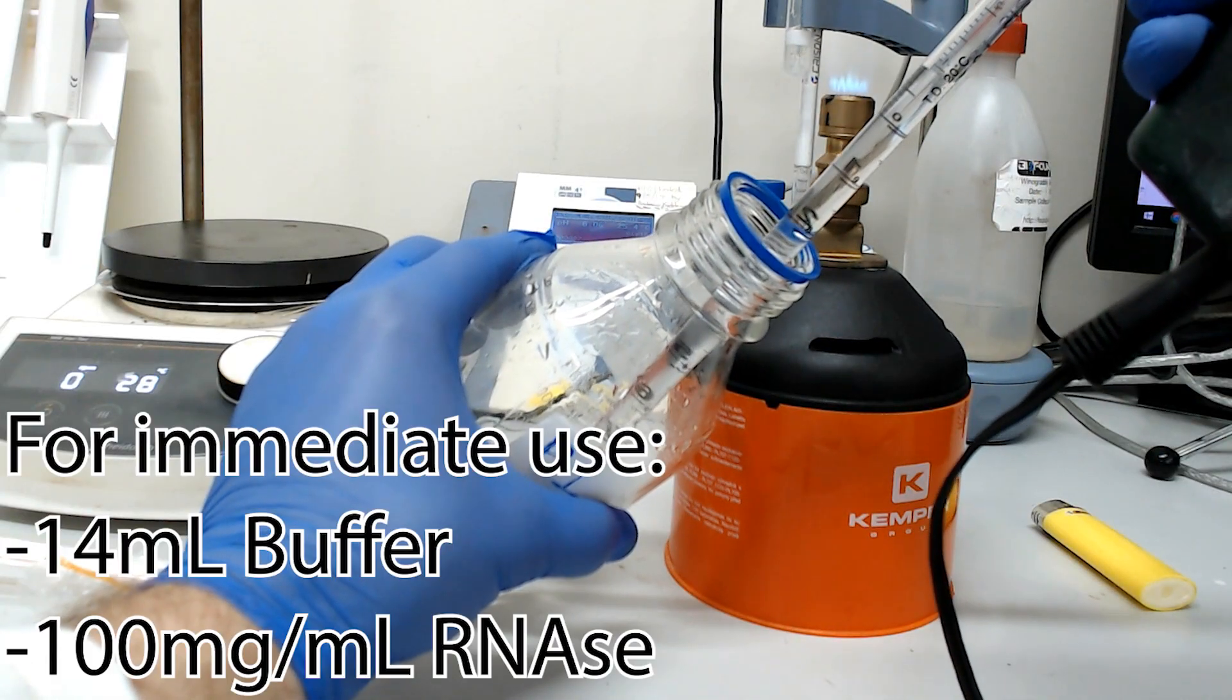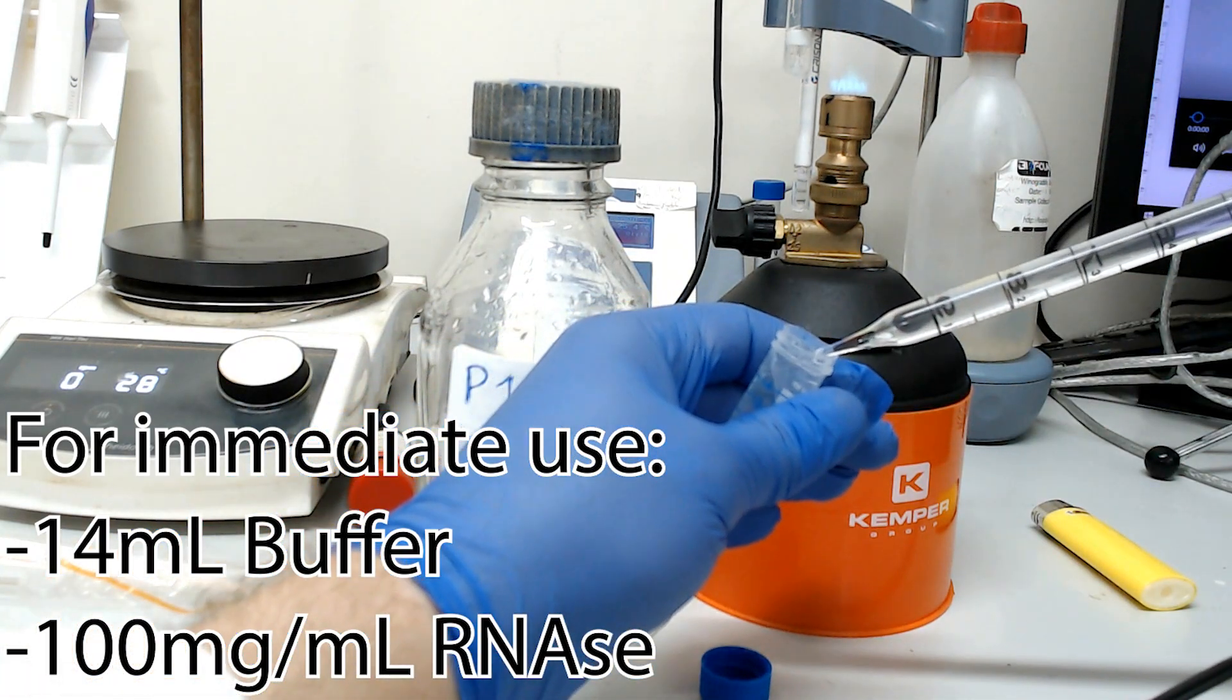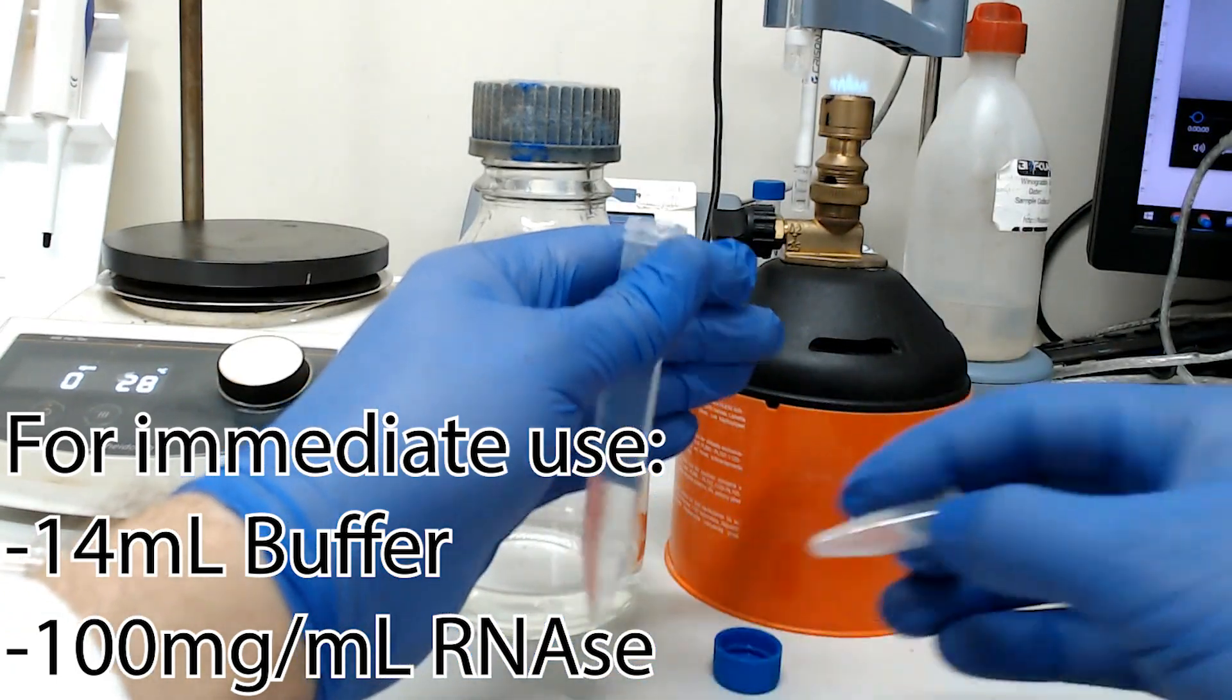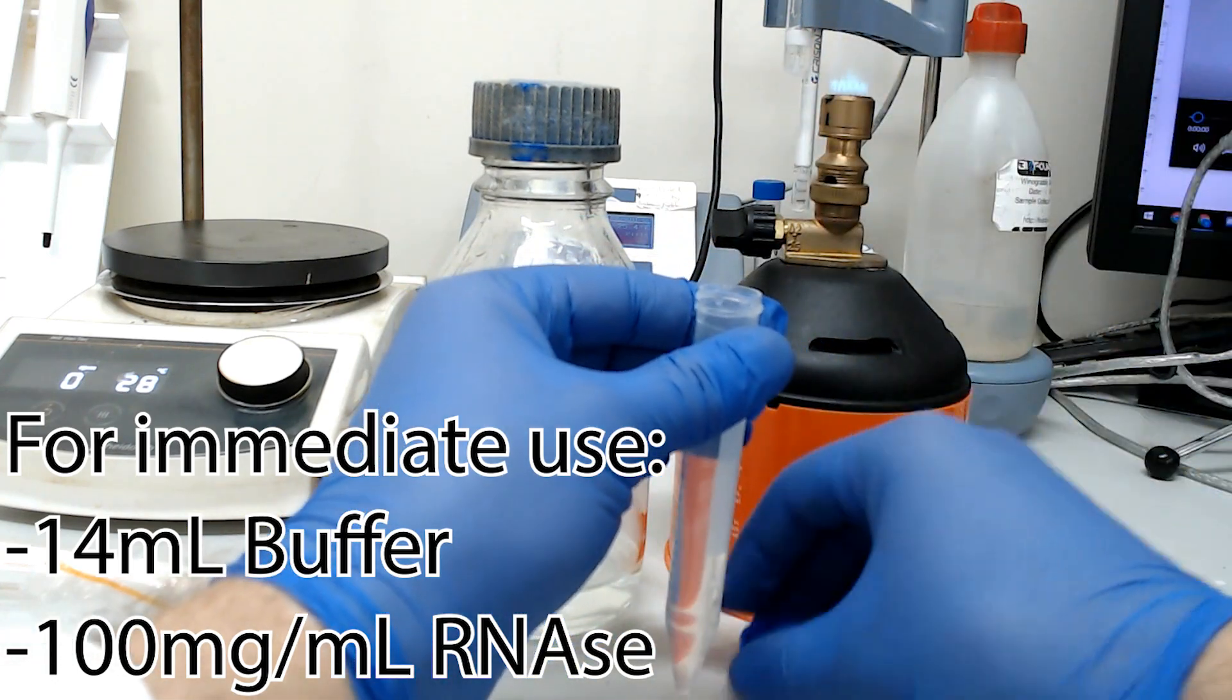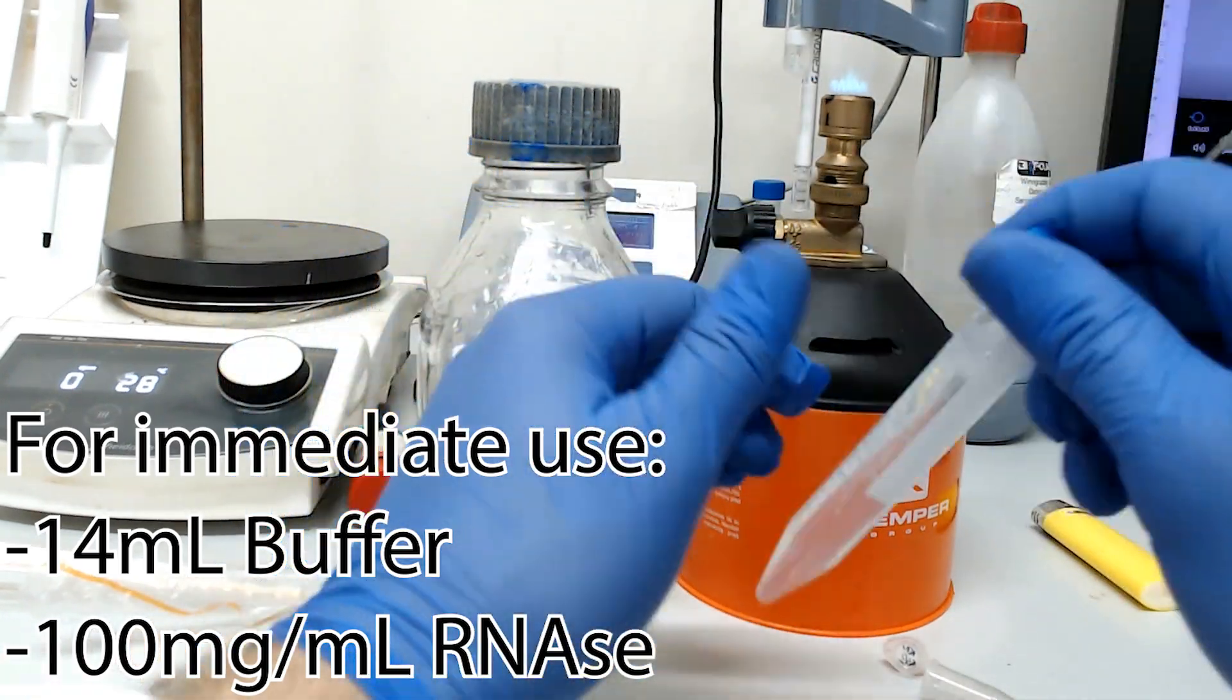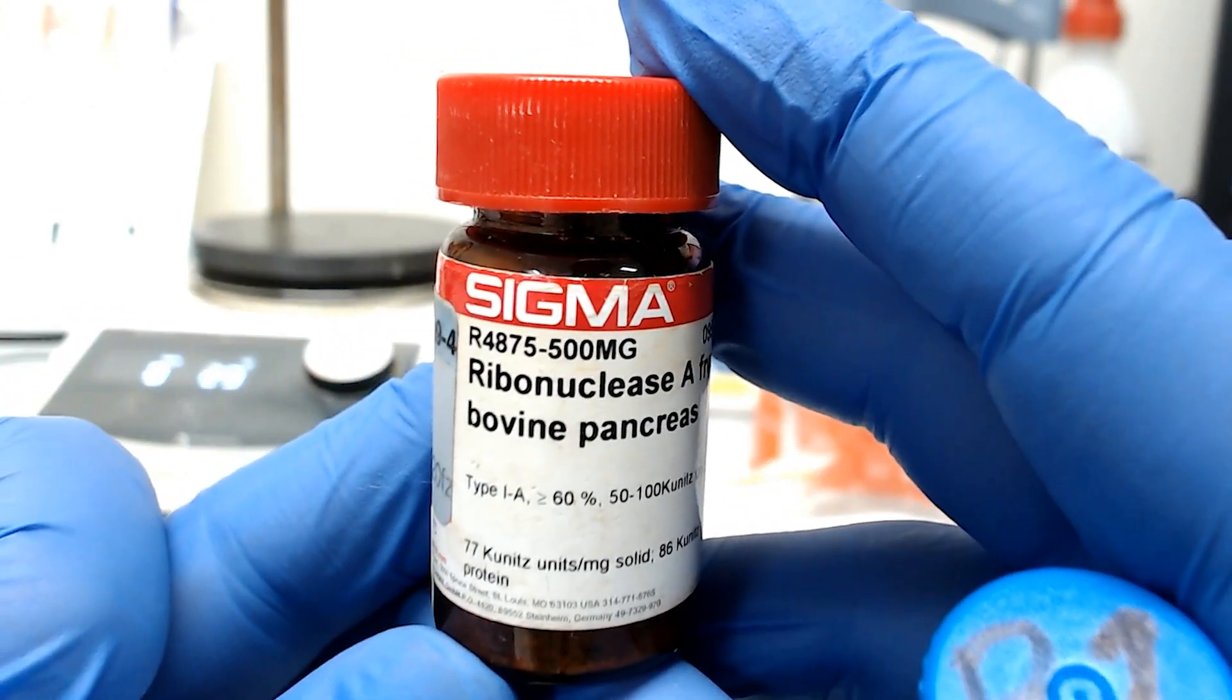I'm also going to inject 14 mils into a falcon tube for immediate use. While both will need to be kept in the fridge, I'll only be adding my RNase A to this tube due to its short shelf life. It would take too long to break down all the various units and concentrations that RNase A can come in, but the final concentration that you need to have in this tube is 100 micrograms per mil. On the bright side, RNase is super stable while in powdered form. So stable, in fact, that our lab uses the scrapings from the bottom of this jar, chucked out by a far wealthier establishment. God bless capital A.